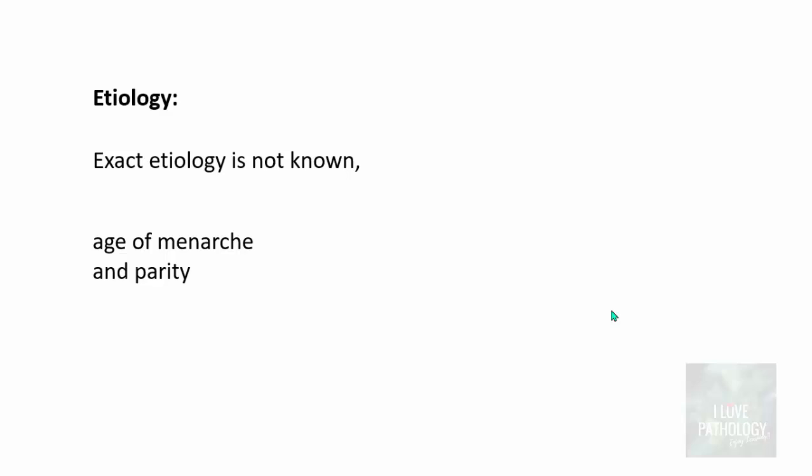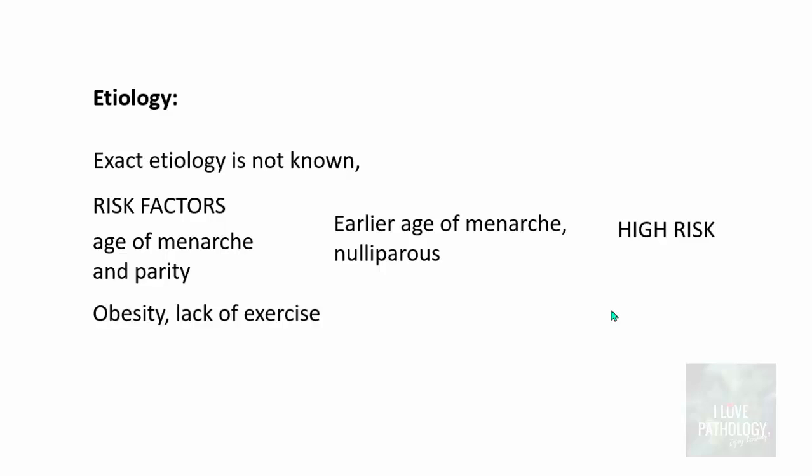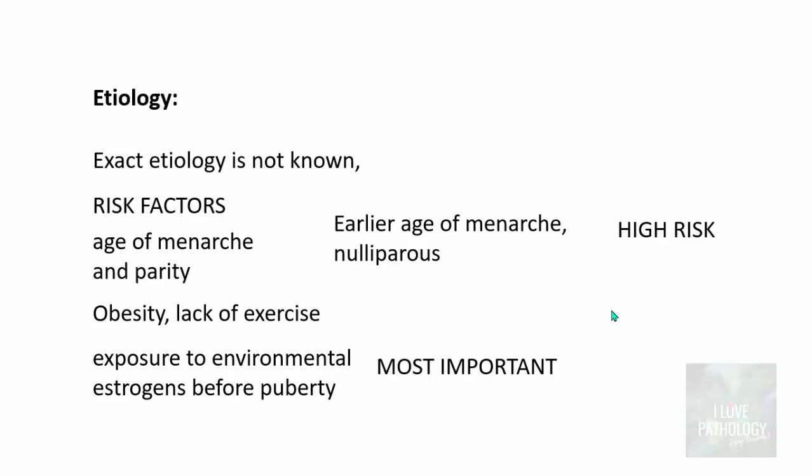The etiology of uterine leiomyoma is not known but then age of menarche and parity, they are the most important risk factors. So earlier age of menarche and if that particular individual patient is nulliparous, these individuals are at high risk of developing leiomyomas, uterine leiomyomas. Other risk factors are obesity and lack of exercise. The most important one being exposure to environmental estrogens before puberty. That's an important risk factor because that leads to hyper responsiveness even to the normal levels of estrogen at adult stage and that's why leiomyomas can occur in these individuals.